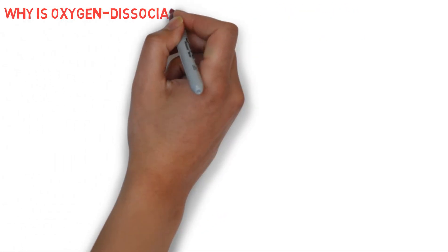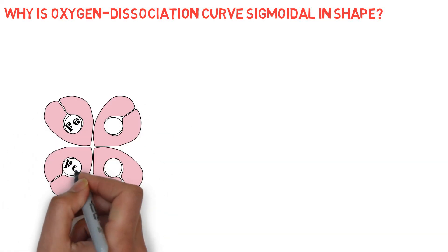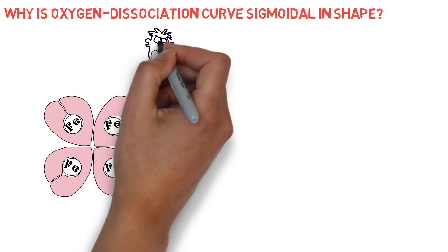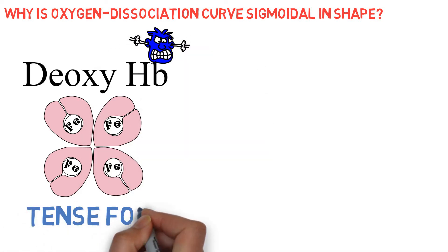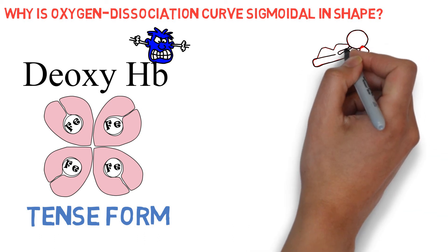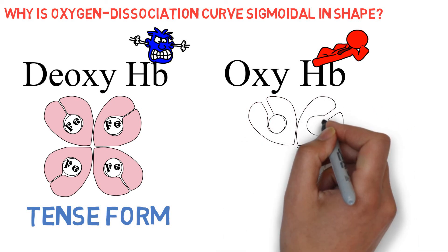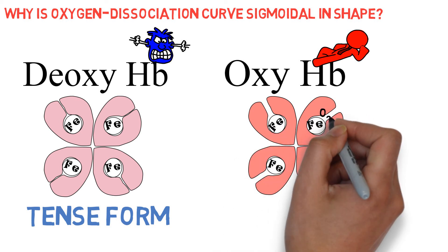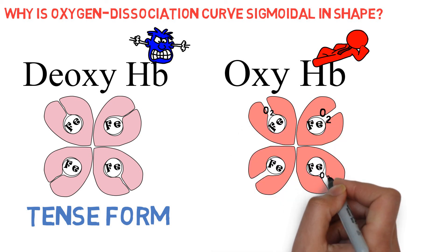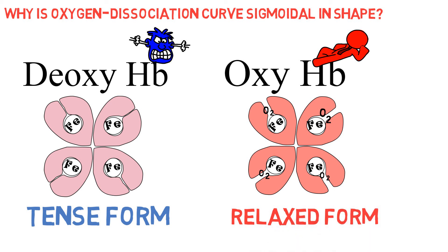Why is the oxygen dissociation curve sigmoidal in shape? The quaternary structure of hemoglobin determines its affinity for oxygen. In deoxyhemoglobin, the globin units are tightly bound in a tense T configuration, which reduces the affinity of the molecule for oxygen. When oxygen is first bound, the bonds holding the globin units are released, producing a relaxed or R configuration. This exposes more oxygen binding sites, and the net result is a 500-fold increase in oxygen affinity. In tissues, these reactions are reversed, resulting in oxygen release.